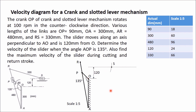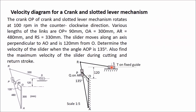Draw rectangles around S and P to show sliders. Remember that wherever there is a slider, you must show two points at the same place. S is one point; at the same place write another point T, which is on the fixed guide. Similarly, P is on the slider, but at the same place write another point Q which is on AR. This is essential for drawing the velocity diagram. The crank OP rotates at 100 RPM in the counterclockwise direction.